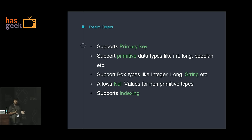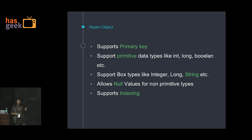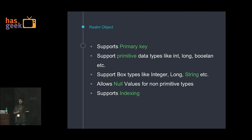What does a Realm object support? It supports primary keys, all primitive data types like int and long, box types like Long, String, Boolean, null values for box-type data types, and indexing. For now there are limitations, but basic things are covered. There is no concept of foreign keys in Realm — there is a concept of relationships, which we will see, but no foreign keys as such.